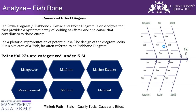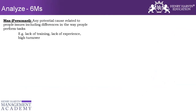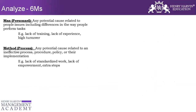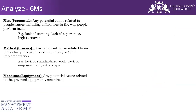Does anybody have any questions so far for people who have never done it before? So these are just examples of the different headers that I talk about. How do you know which cause to put under which header? Lack of training, lack of experience — this is under 'Men.' Any sort of process gap goes under process or method. Machines or equipment issues go under machinery.